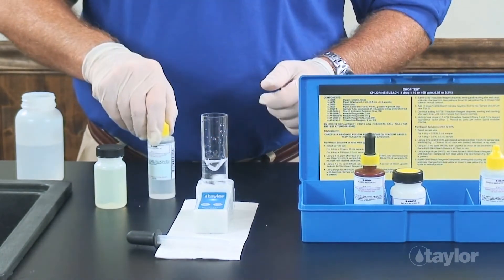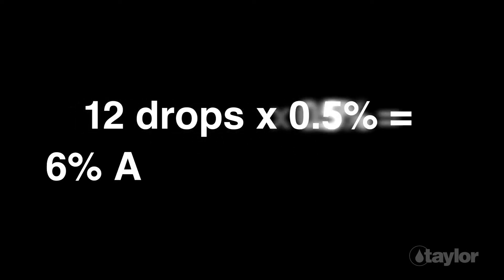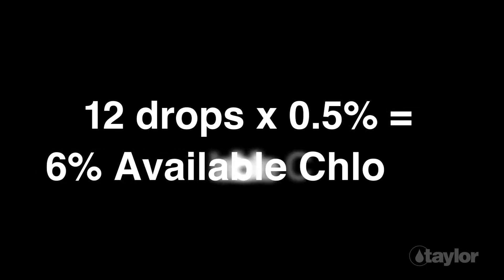Multiply the total number of bleach reagent number three drops used to reach the endpoint by the desired equivalence factor. In this case, one drop equals 0.5 percent. Record the result as percent available chlorine.